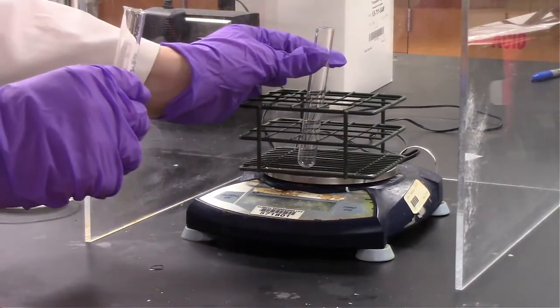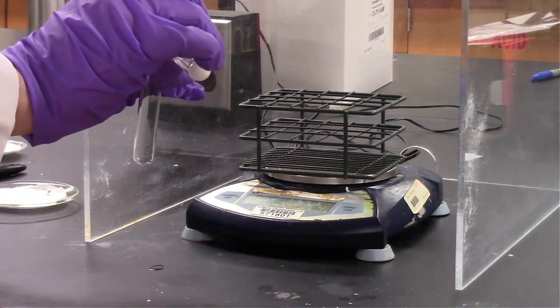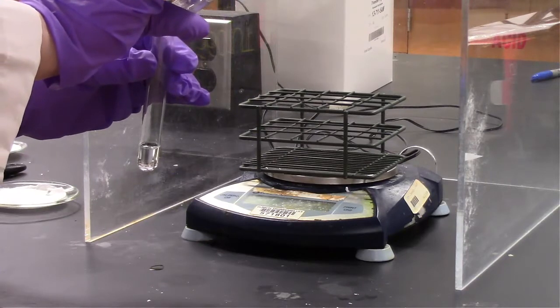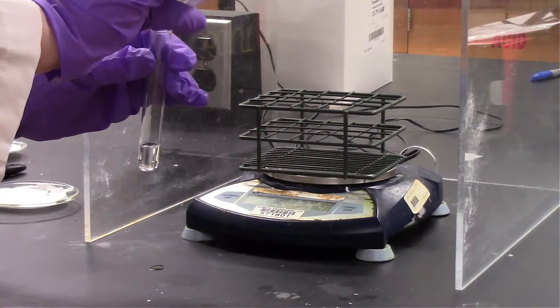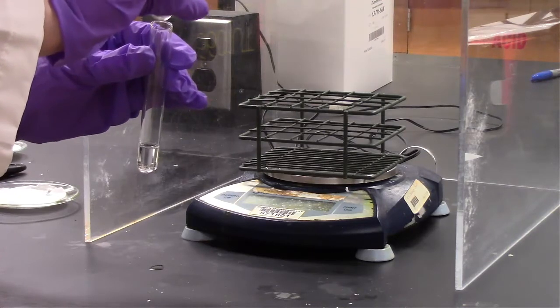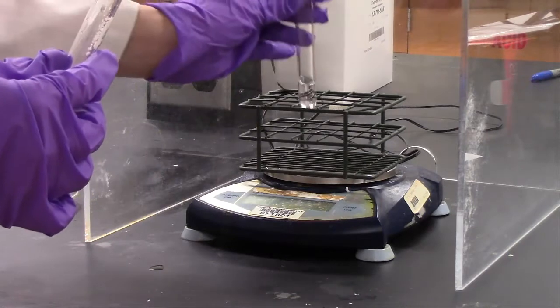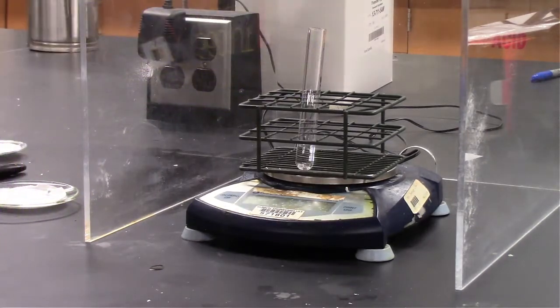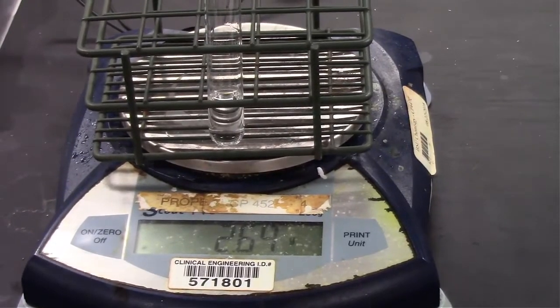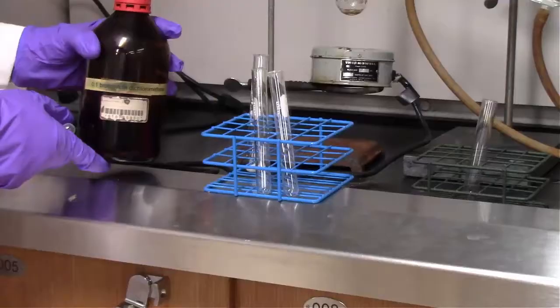Which means we're at the point where we can decant our pure cyclohexene into something else, ideally pre-weighed or zeroed, and then we can assess the weight of the product that we isolated. We ended up with 2.69 grams of our product. So that is our experimental yield, 2.69 grams of product.